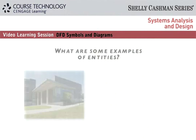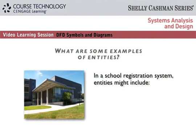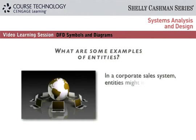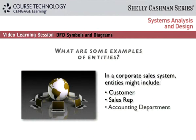In a school registration system, entities might include student, registrar, instructor, and course. In a corporate sales system, entities might include customer, sales rep, accounting department, and warehouse.